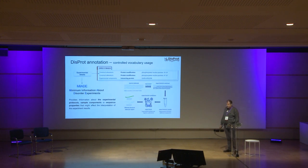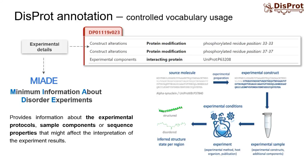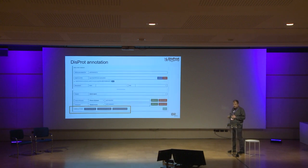The latest addition is MIADE — the Minimum Information About Disorder Experiments — as a controlled vocabulary. MIADE provides information about the experimental protocol, sample components, and sequence properties that might affect the interpretation of experimental results. This was important because many publications don't study the wild-type protein under natural conditions; there can be protein modifications or interacting proteins present. After extensive work and community consultation, the paper will be coming out soon in Nature Methods.